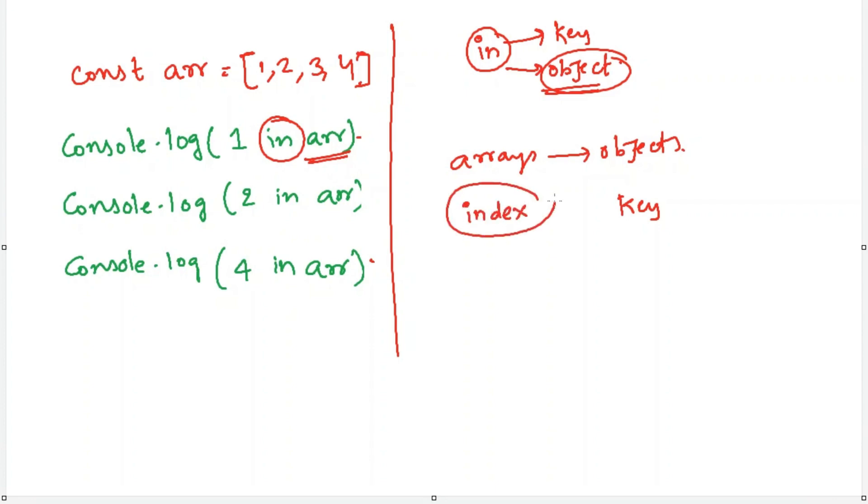So index in array is similar to key in object. So in operator will check whether the index is present in the array indexes or not.